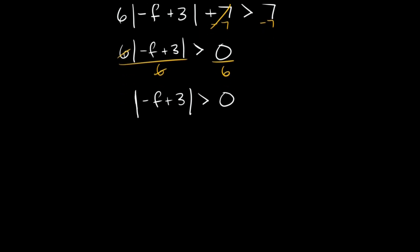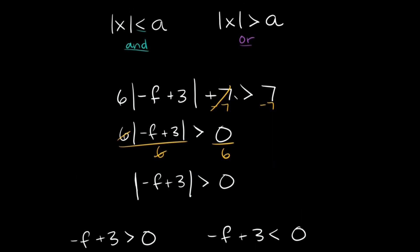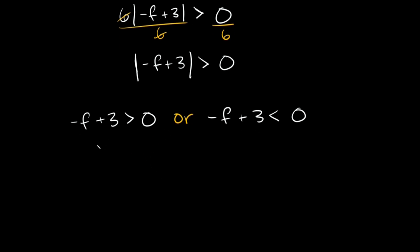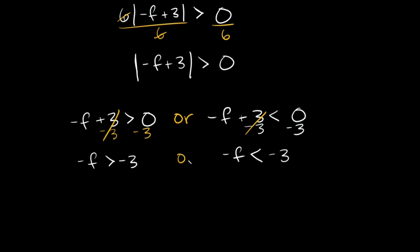Split into two inequalities: negative f plus 3 is greater than 0, or negative f plus 3 is less than 0 (flip the sign; 0 stays as 0 since it's neither positive nor negative). The original sign was greater than, so we use 'or'. Solving the first: subtract 3 from both sides, so negative f is greater than negative 3. For the second: subtract 3 from both sides, so negative f is less than negative 3.